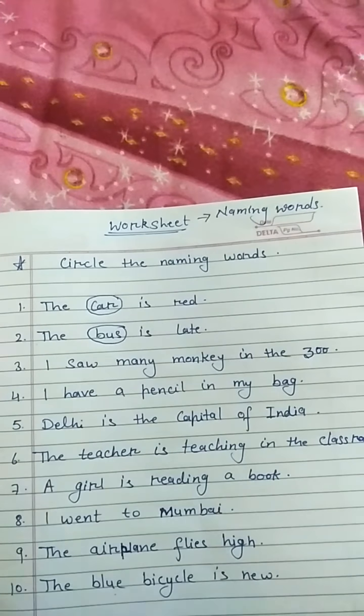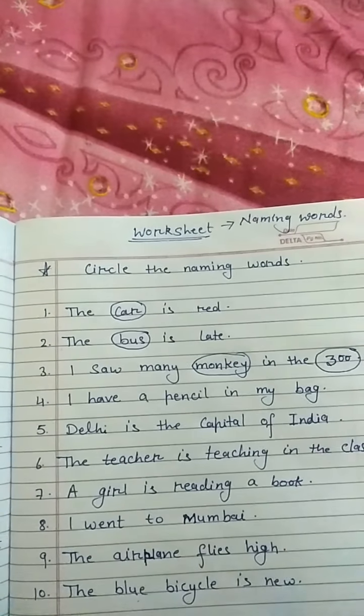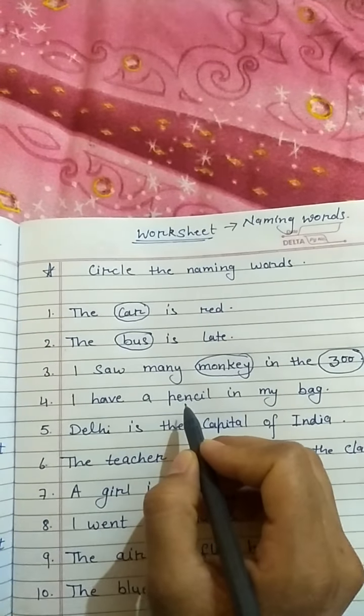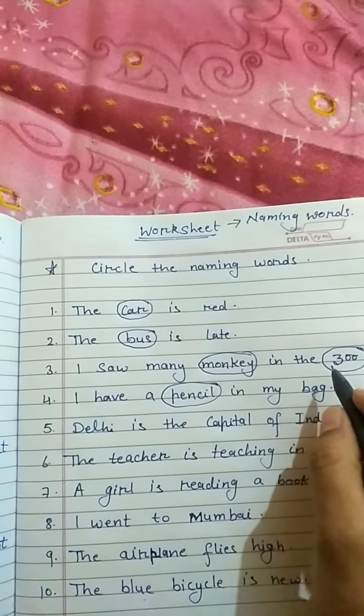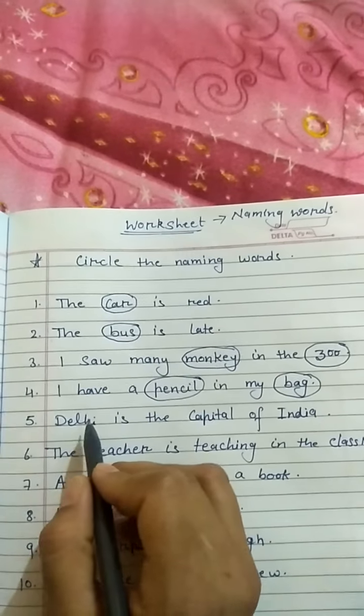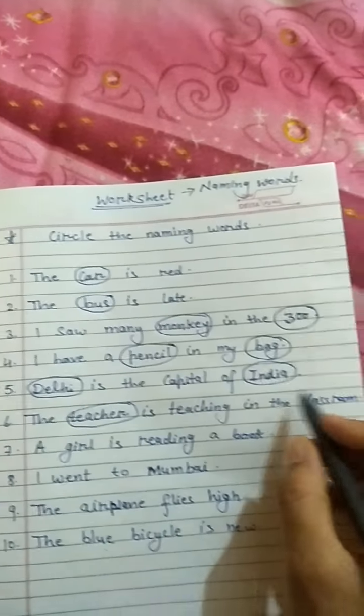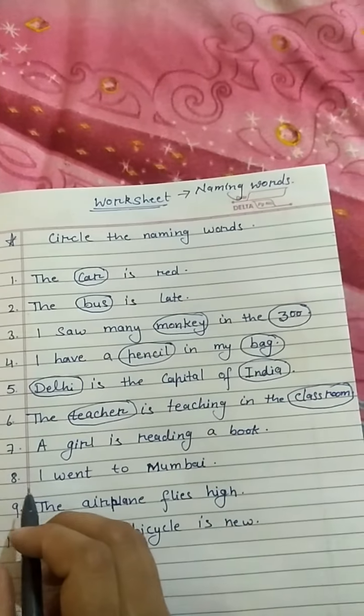Next one: I saw many monkeys in the zoo — monkey is the name of an animal and zoo is the name of a place, so both are naming words. I have a pencil in my bag — pencil is the name of a thing and bag is also a thing, so we circle both. Next: Delhi is the capital of India — Delhi is a place and India is also a place, so both are naming words. The teacher is teaching in the classroom — teacher is a person and the classroom is a place, so both are naming words.